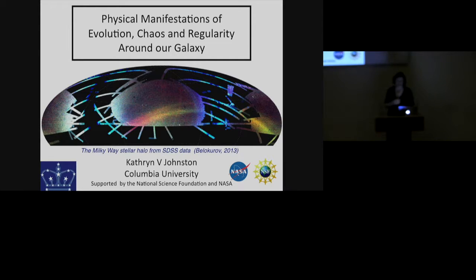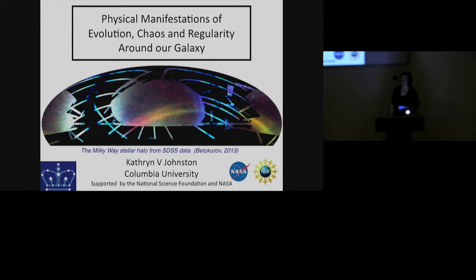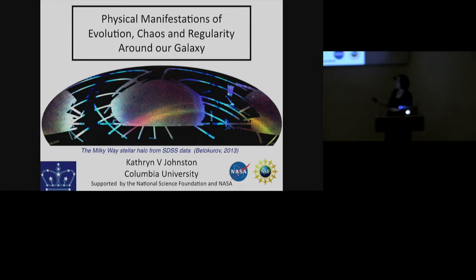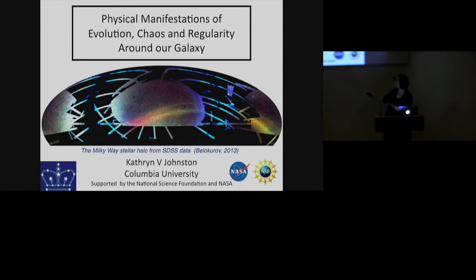This has been really enabled by star count surveys that contain catalogs of millions upon millions of stars put together in the last 15 to 20 years. This is an example of the sort of structure that has been seen — a visualization put together by the Cambridge group, Vasily Belokurov, a 2013 version. What you're looking at is a map of the sky as mapped by the Sloan Digital Sky Survey.